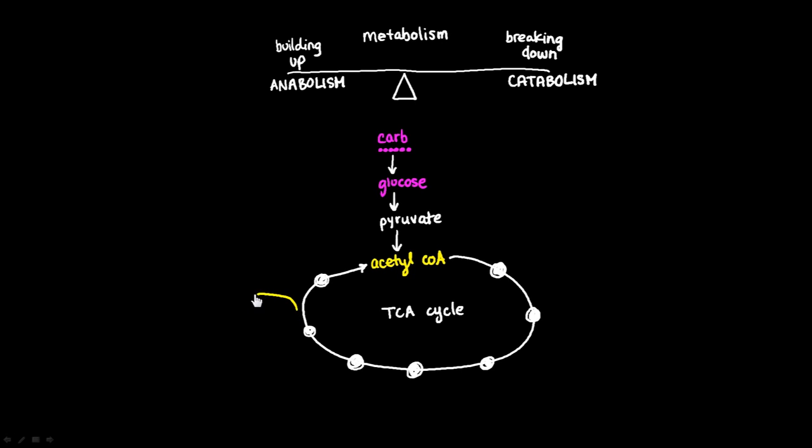And the things that are bounced off are these high-energy carriers. What happens to the high-energy carriers next is that they basically bounce down a staircase called the electron transport chain. And as they go down that staircase, they give off a chemical called ATP. And ATP is the currency of energy in the human body.